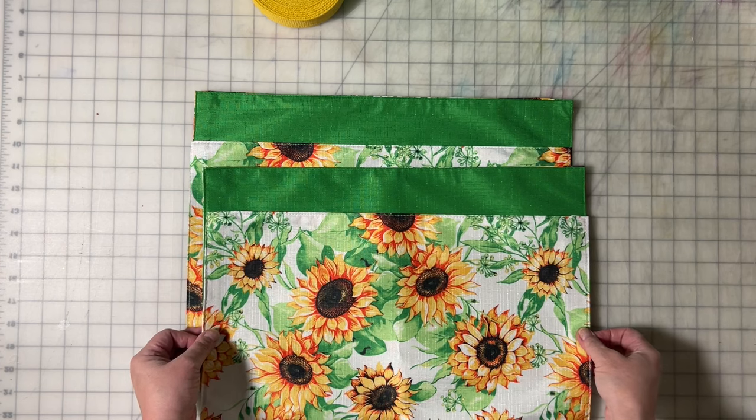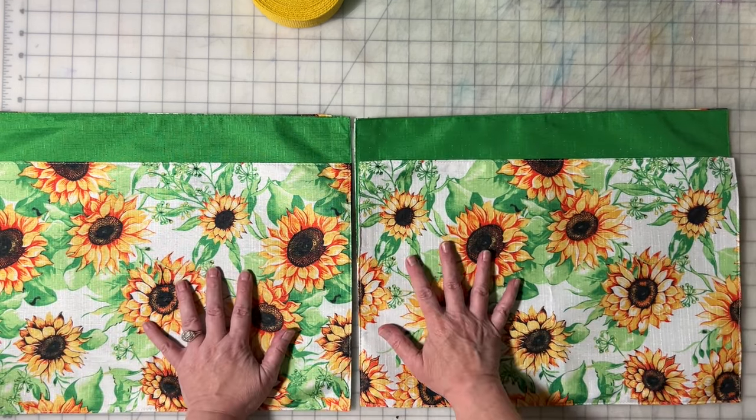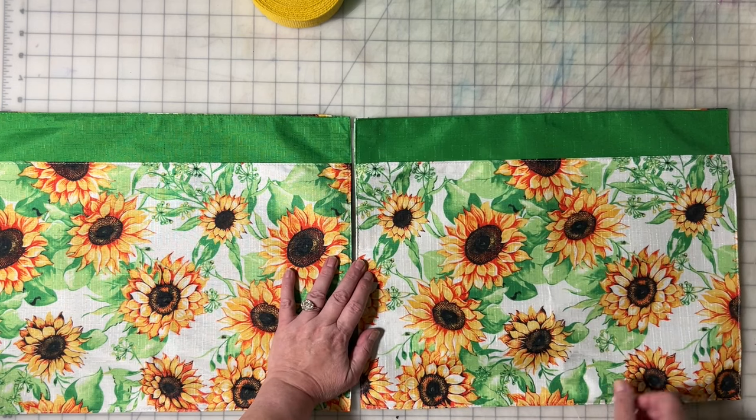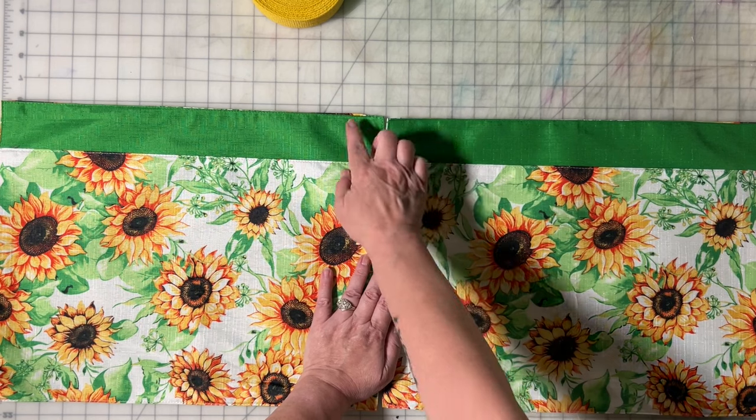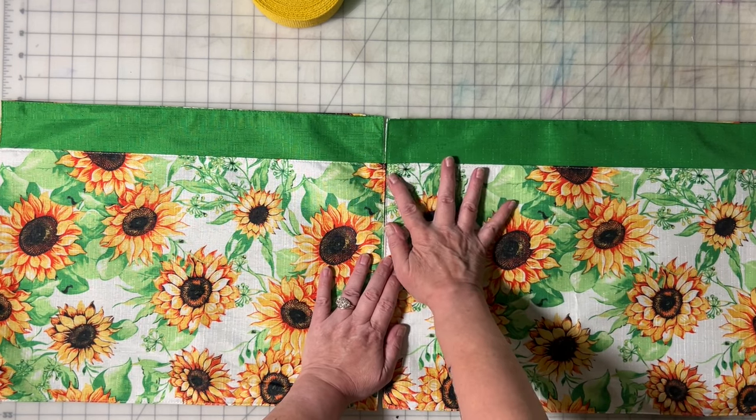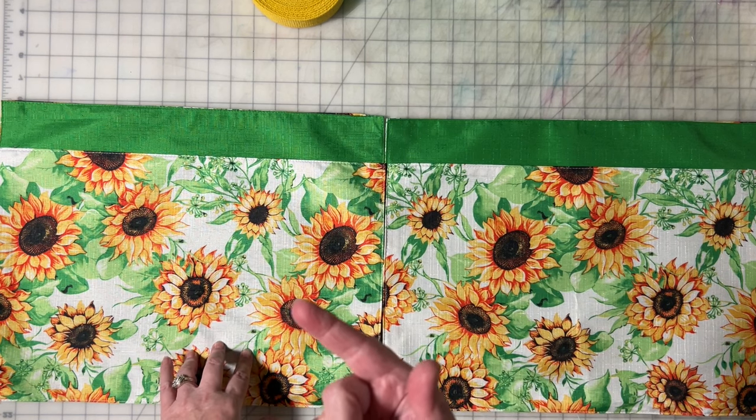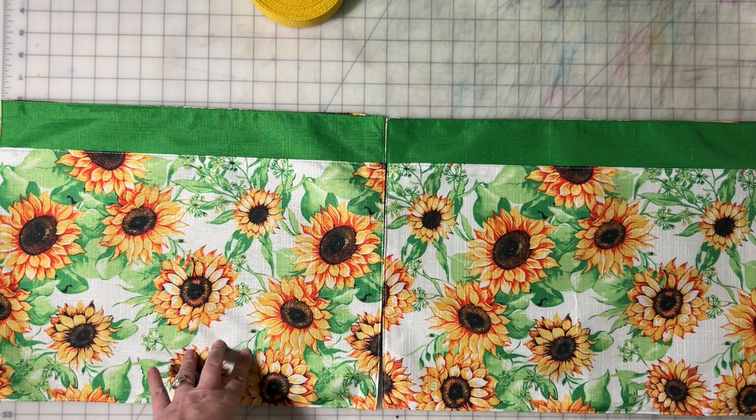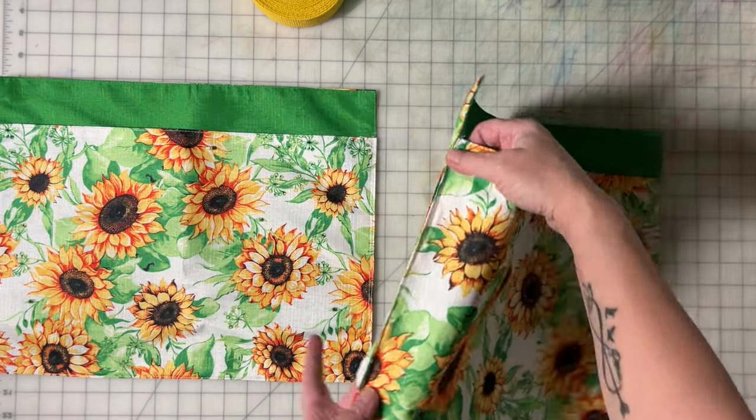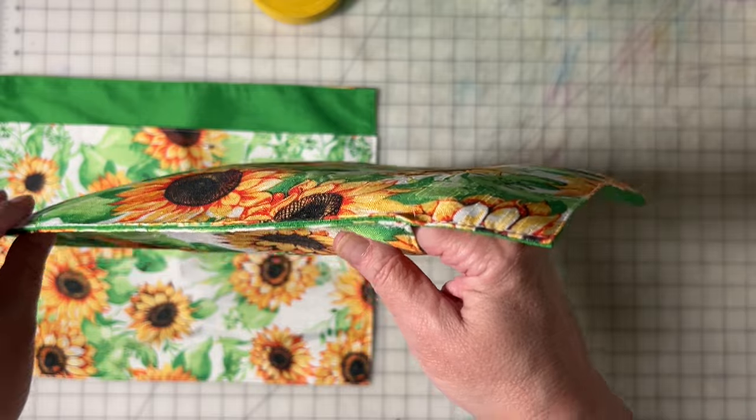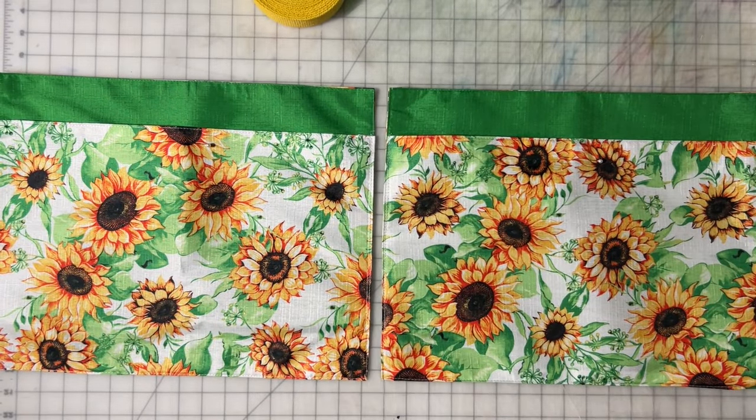We are going to stagger two of the placemats like this, a little bit down from the top, and attach them together. We're going to do the same thing to another pair of placemats - one for the front, one for the back. Let me pin these together and make sure that spacing is the same or close, and get it basted at the bottom.